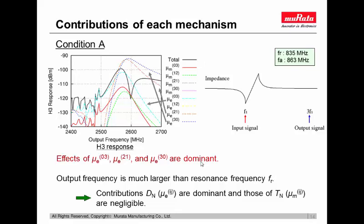In this figure, the black line is the calculated total nonlinear signal response, and the other color lines represent the contribution of each nonlinear effect. In driving condition A, the effects of μE03, μE21, and μE30 are dominant in the nonlinear response. In this condition, the output frequency is much larger than the resonance frequency, so acoustic waves are hardly excited in the output signal region. Therefore, contributions of nonlinear electric flux density are dominant and contributions of nonlinear stress are negligibly small.